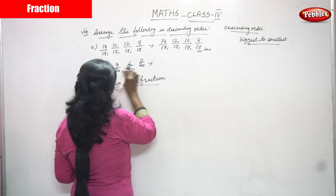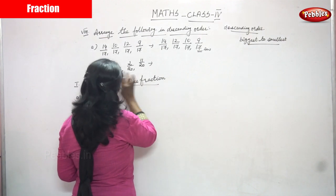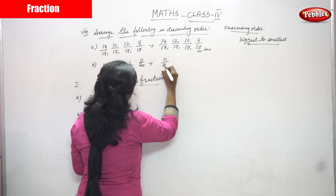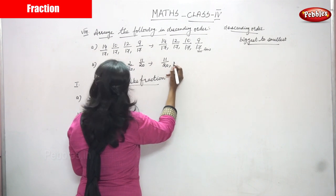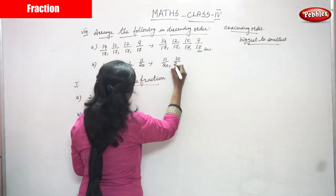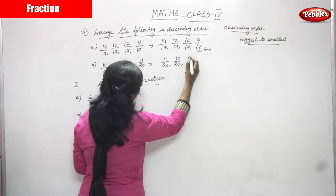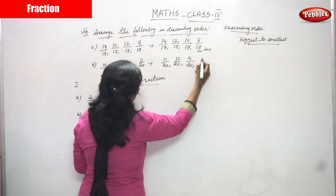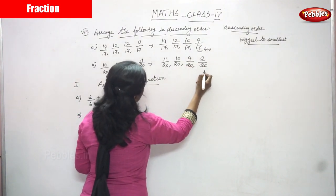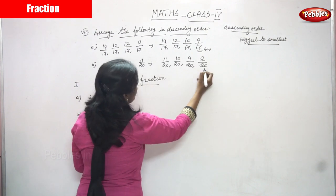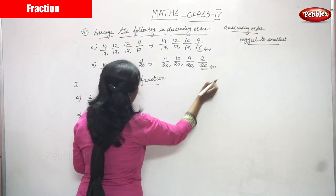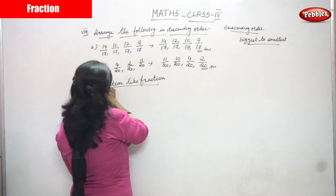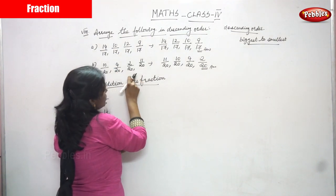Which one is the biggest number in this fraction? 11 by 20 is the biggest. Next is 10 by 20, then 4 by 20, then 2 by 20. So the answer is: 11 by 20, 10 by 20, 4 by 20, 2 by 20.